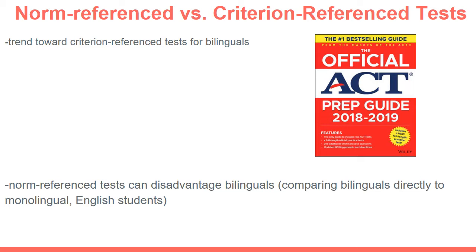Moreover, a lot of students' background vocabulary knowledge comes from the home environment. Many English language learners live in home environments that speak a language other than English, so they are developing less English vocabulary due to less time and exposure. The vocabulary of an English language learner is often significantly less than a monolingual native English speaker in the early years of schooling. However, with more years in school, the gap gets smaller, and English language learners often catch up and can even surpass their monolingual counterparts in vocabulary ability.